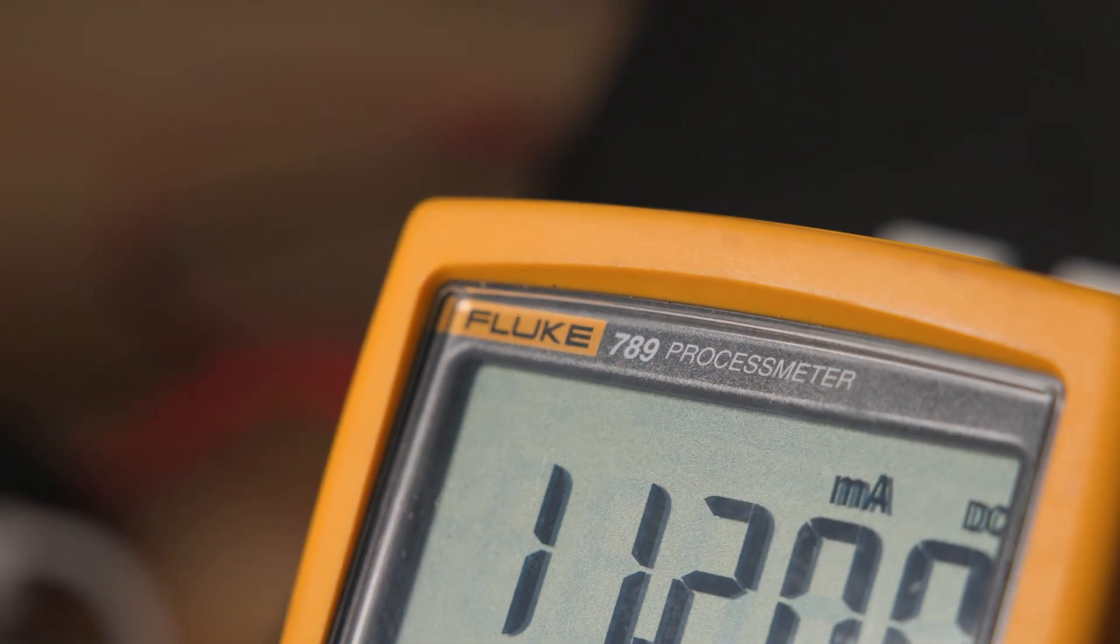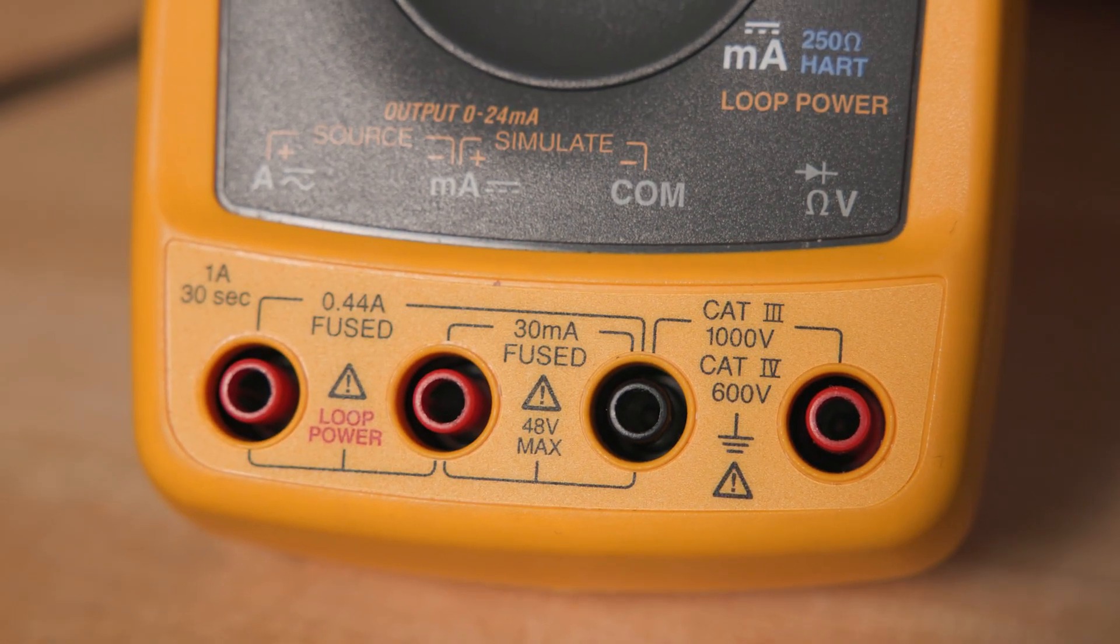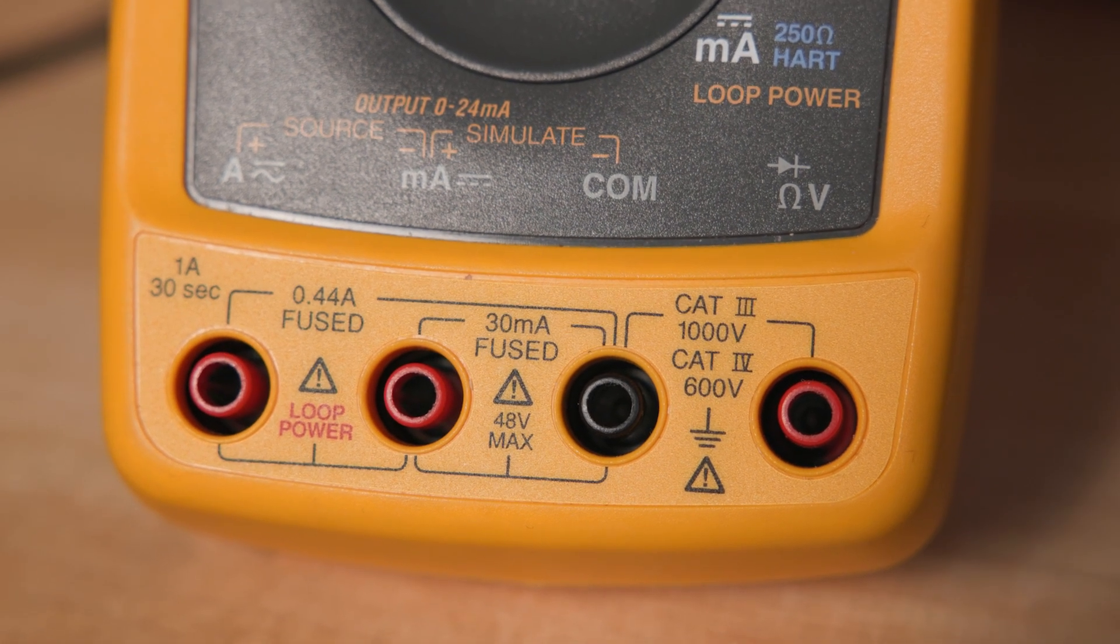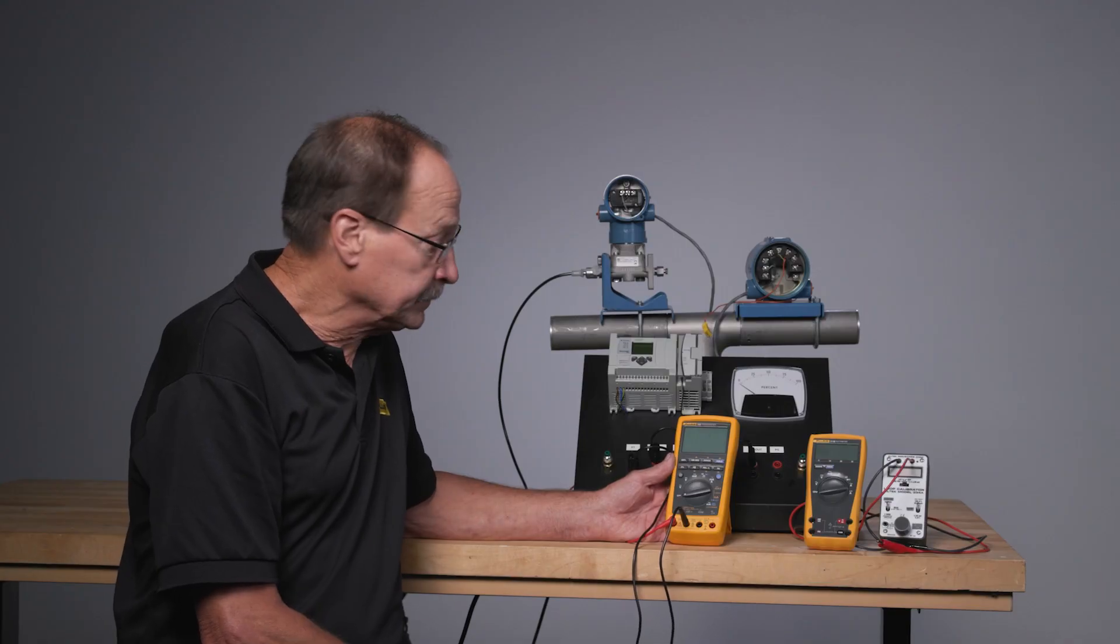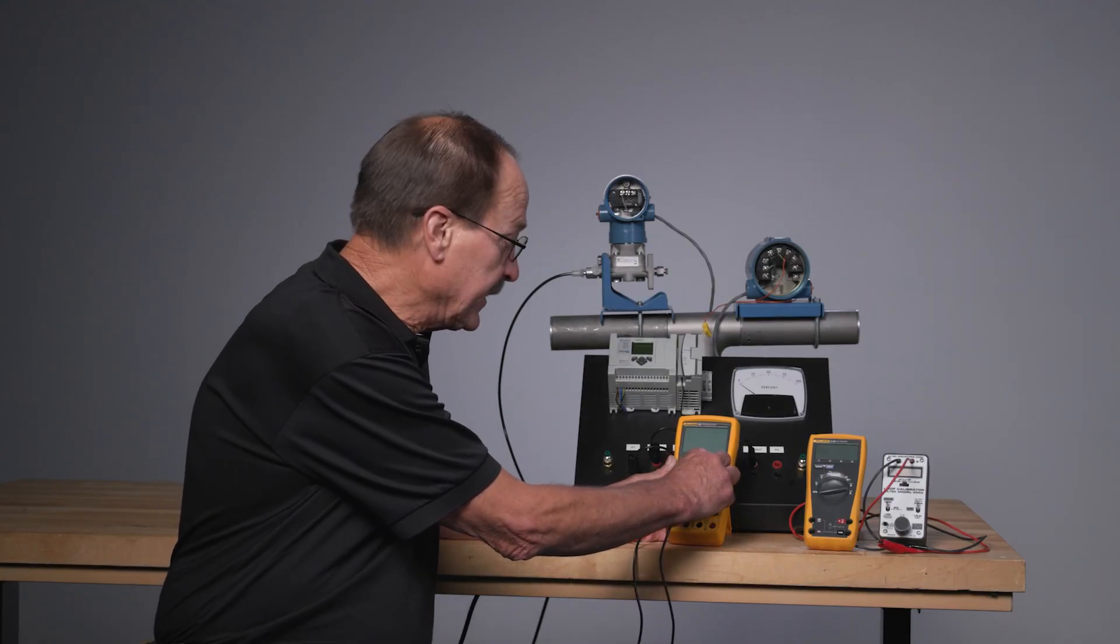And it carries a Category 3,000 volt, Cat 4, 600 volt safety rating, which you cannot find traditionally in a loop calibrator and is unique to the 789 Process Meter.